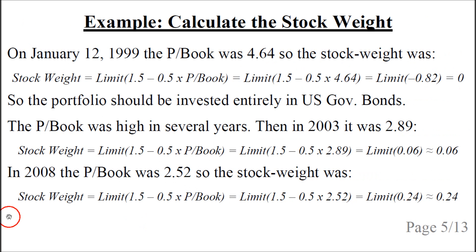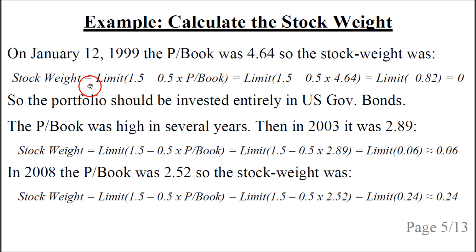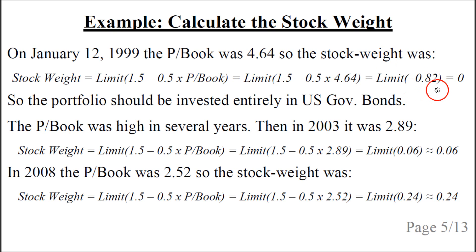Let's look at a few examples on how to calculate the stock weight. On January 12, 1999, the price-to-book ratio was 4.64. Using the formula, we plug in the price-to-book ratio and the inner number becomes minus 0.82. The limit function limits between zero and one, and since this is lower than zero, the result is zero.